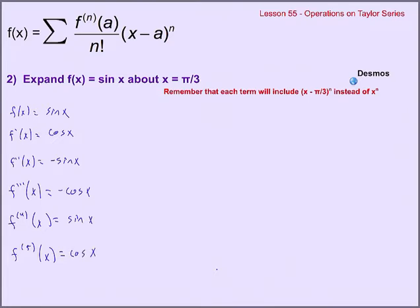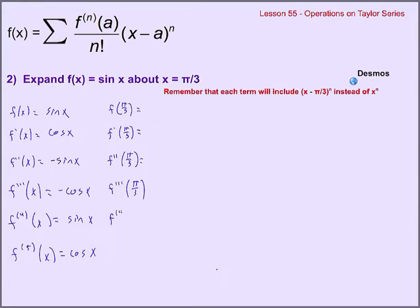If I'm writing this too fast, don't forget you can always pause the video. What makes this a little bit more frustrating is we're going to be evaluating not at x equals 0 like a Maclaurin series — which is so easy with sines and cosines — but at pi over 3. So we need f of pi over 3, then f prime of pi over 3, f double prime of pi over 3, and so on. These aren't going to be zeros and ones, but they are numbers that we know, so we should still be able to do this. The last one is the fifth derivative evaluated at pi over 3.